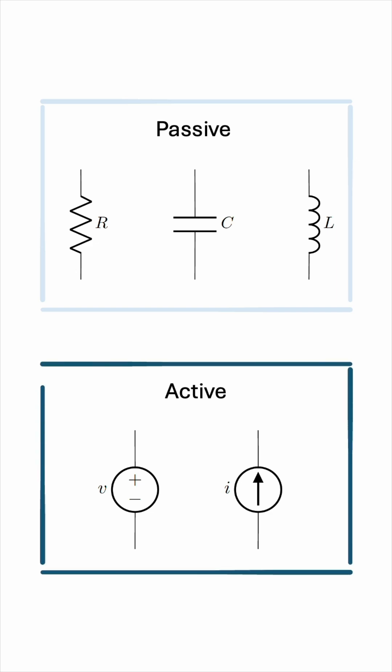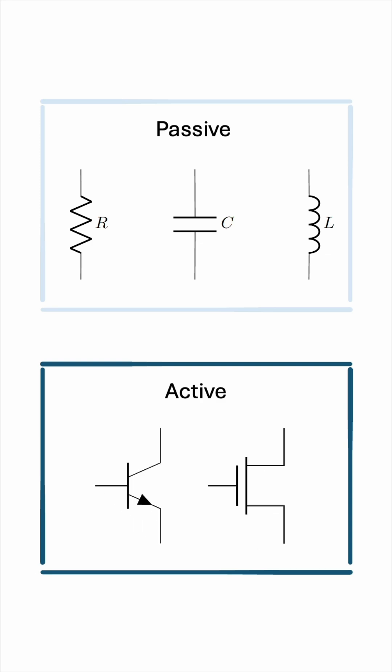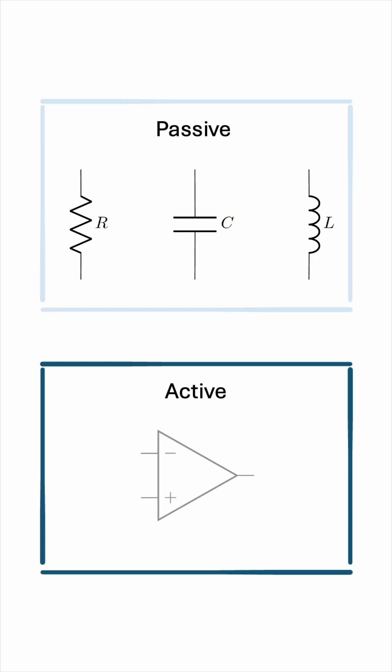But it doesn't stop here. Active elements also include transistors. These are considered active because they can amplify electrical signals and control the flow of current, requiring an external source to operate. Therefore, operational amplifiers, or op-amps, are also active.